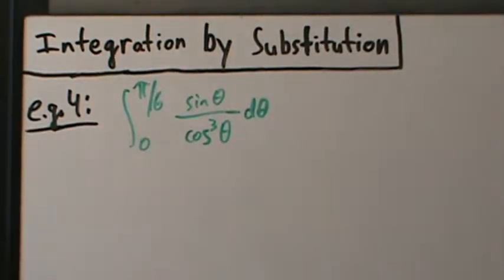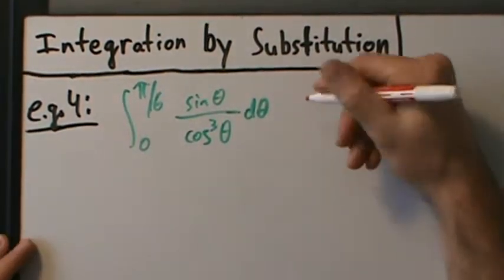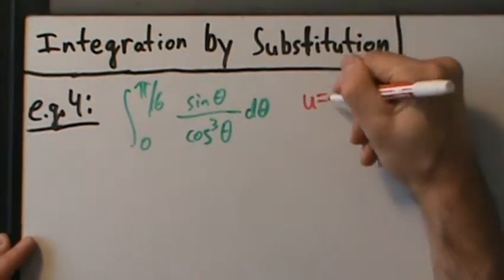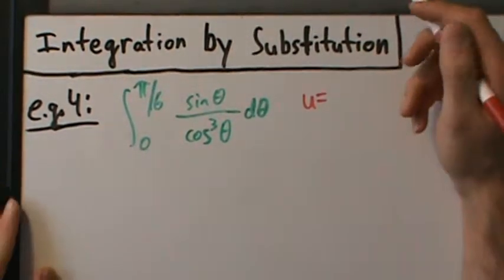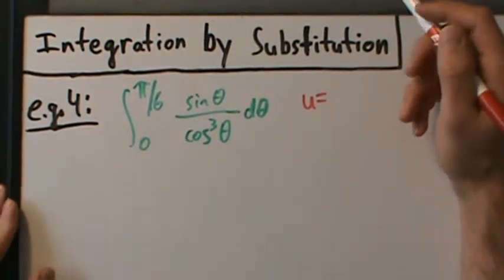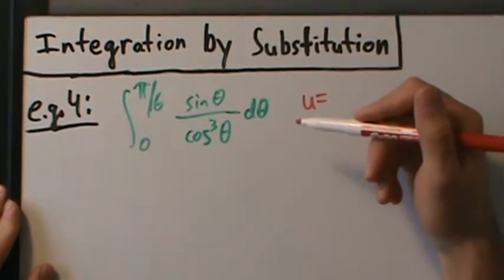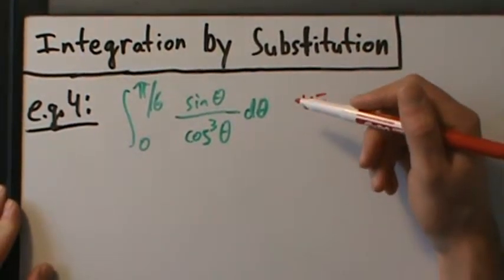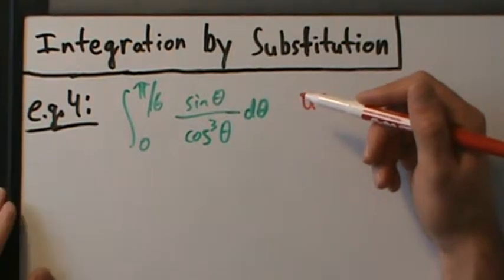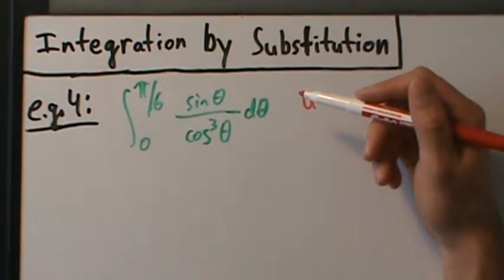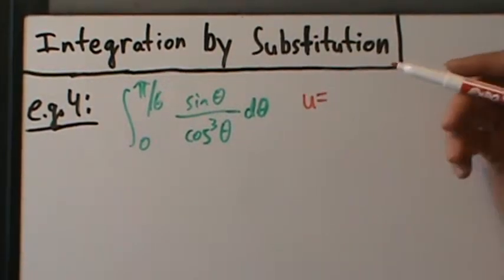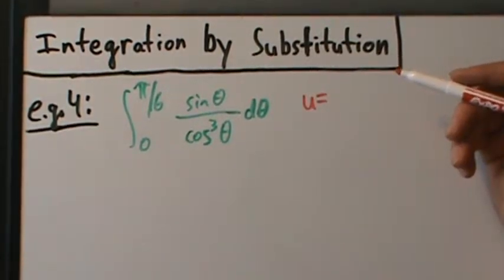So what do we want to let u be? Remember the rules: in general we're looking for a function and a constant multiple of its derivative, or maybe just a function and its derivative. More generally, a function and a constant multiple of its derivative.